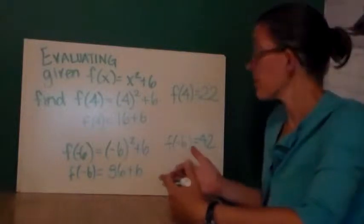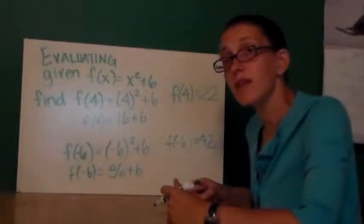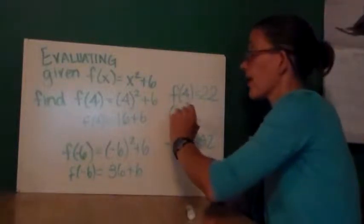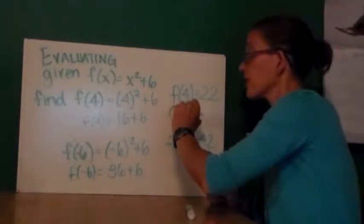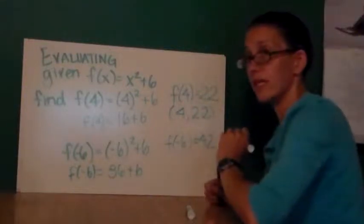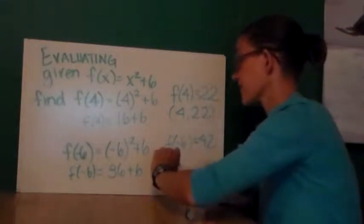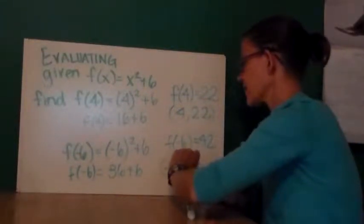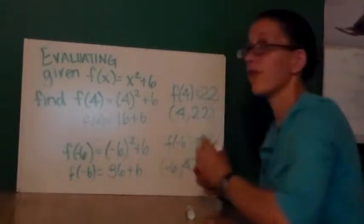My final answer after I do the order of operations is 42. In good news, both of these will give me points on the graph of this function. f of 4 equals 22 matches up to the point 4 comma 22. This matches up to the point negative 6 comma 42.